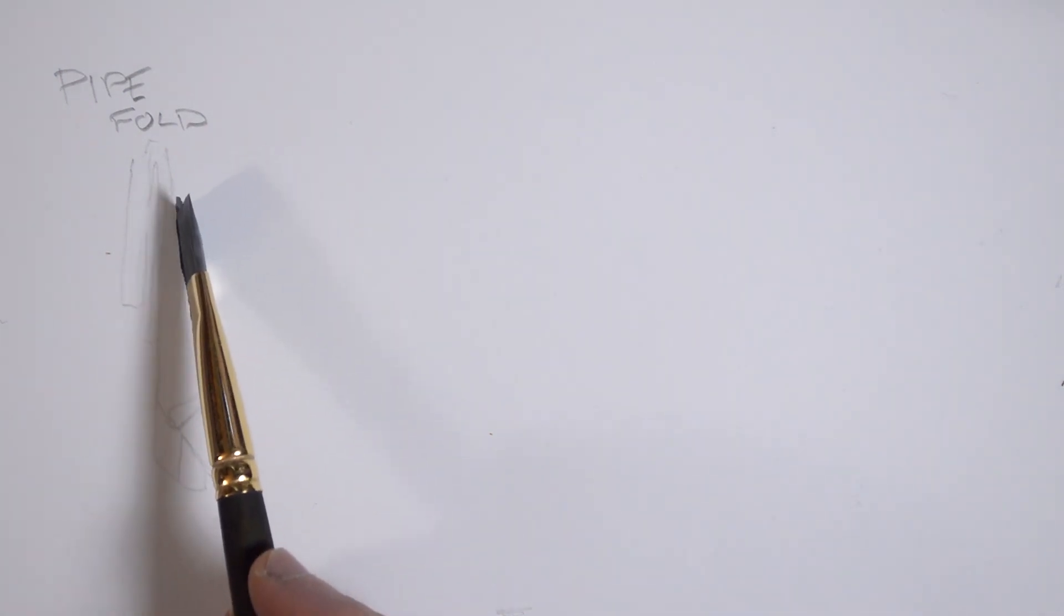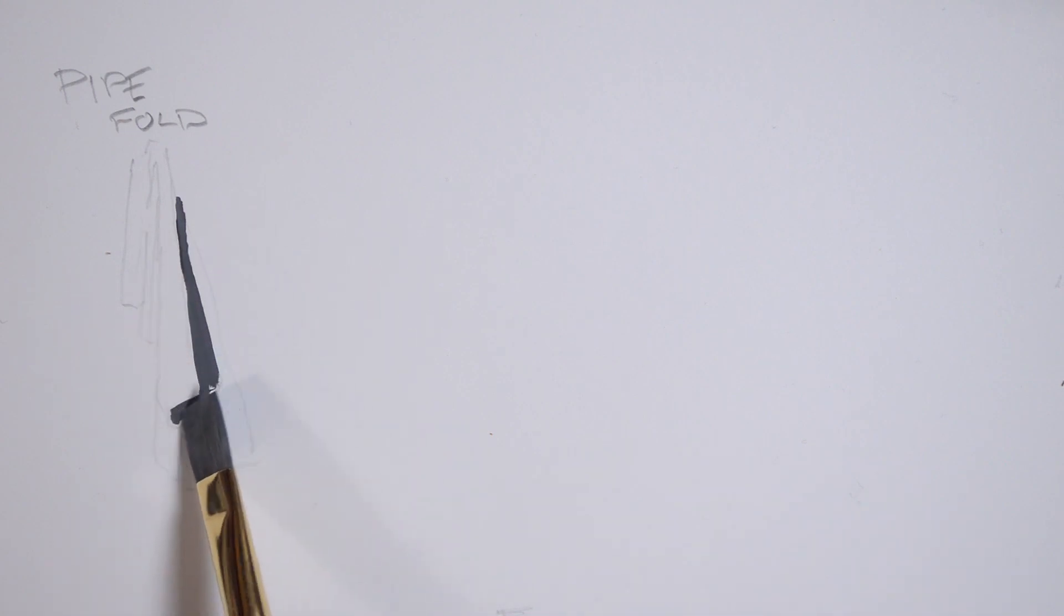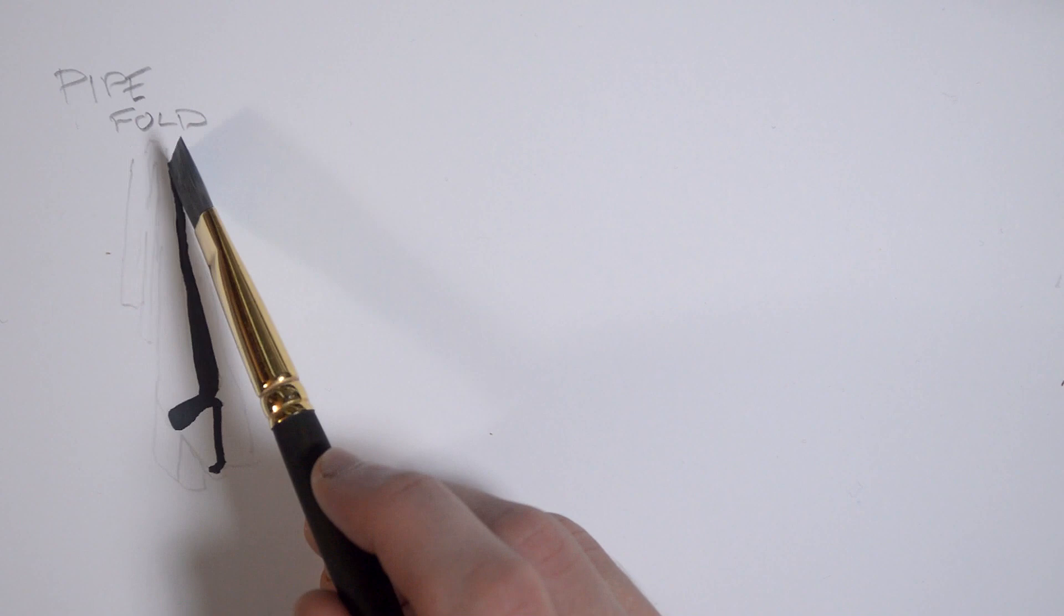The first type of fold that we'll be looking at is a pipe fold. The material hangs from one tension point and the fold always points back towards it. A consistent element in all types of folds is that the shapes of the folds always flow in a direction. They always have movement. The pipe fold is the least interesting because the shapes just aren't as dynamic as the others. They just point to one direction like a bunch of cones.